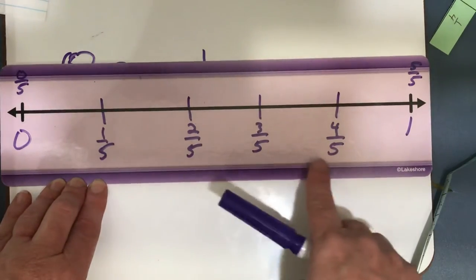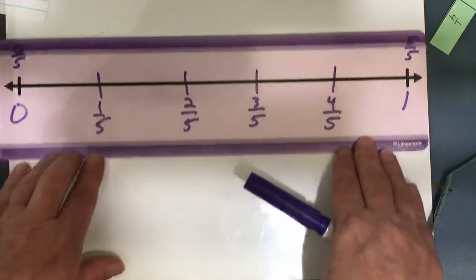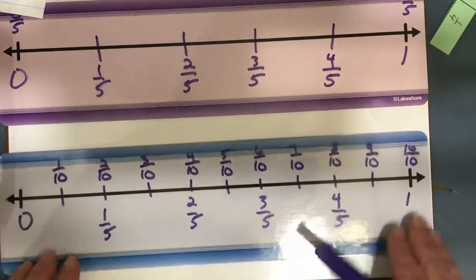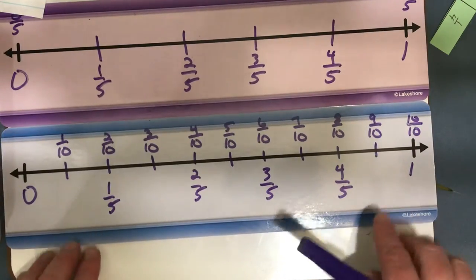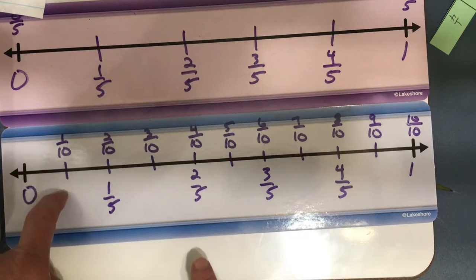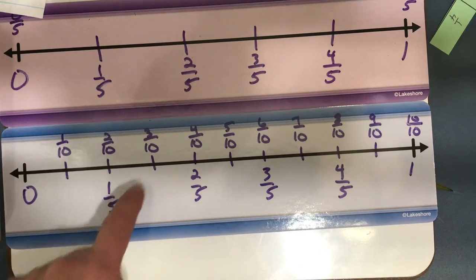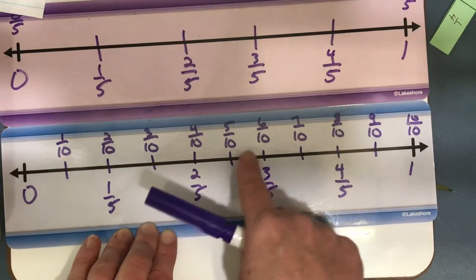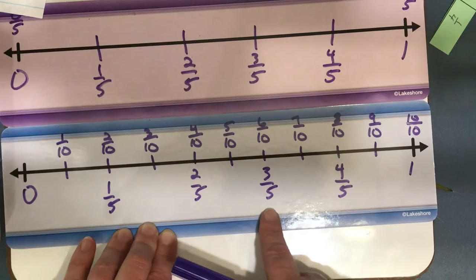I did a number line here with fifths, and I have from 0 to 1, 1 fifth, 2 fifths, 3 fifths, 4 fifths, and then 5 fifths, and then I did another number line that shows fifths, but it also shows tenths. And I can see that it's 1 tenth, 2 tenths, which is the same as 1 fifth, 3 tenths, 4 tenths, which is equivalent to 2 fifths, 5 tenths, 6 tenths, which is equivalent to 3 fifths.